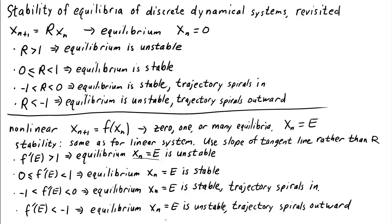This works because if we're close to the equilibrium, the nonlinear system acts like the linear system, where f'(e) is the slope of the tangent line — that is, the slope of the linear approximation.